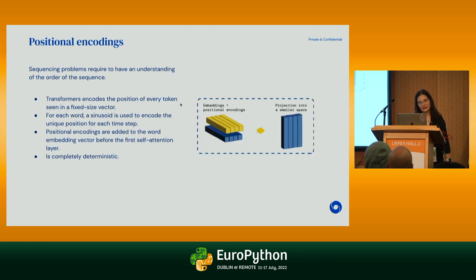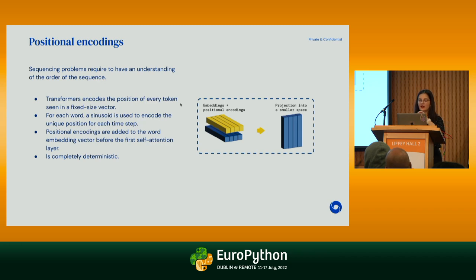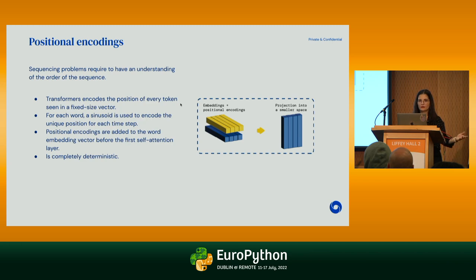On positional encodings: sequence models need to understand the order of the sequence. The authors use a sinusoid to encode the position, so every token at every time step has a deterministic vector. They simply sum the word embeddings with the positional embeddings — that's it, that's positional encodings. You're welcome to try other positional encodings; there's no rule, but by inertia we all use sinusoidal.